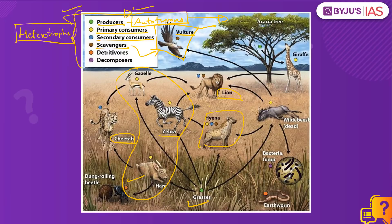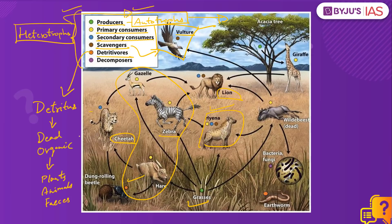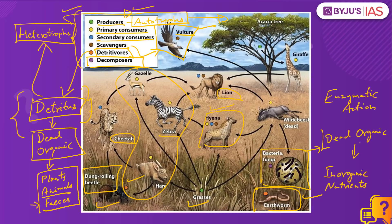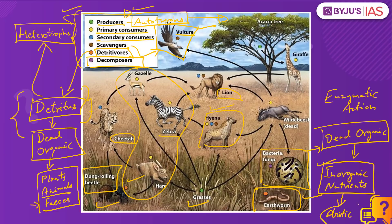Even a hyena can be regarded as a scavenger in some cases. Then we have detritivores — organisms which feed on detritus. Detritus is dead organic matter which includes plant matter, animal matter and even animal feces. Such detritus is directly consumed by a few heterotrophs, known as detritivores. Examples include the earthworm and the dung-rolling beetle. Finally, we have decomposers such as bacteria and fungi, which decompose and break down dead organic matter into inorganic nutrients and return them to the abiotic world through their enzymatic action.